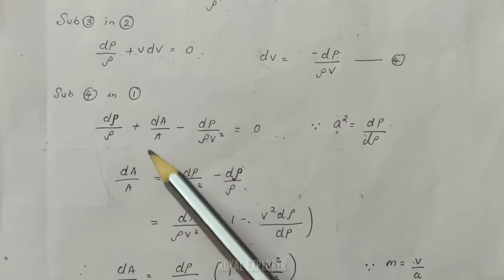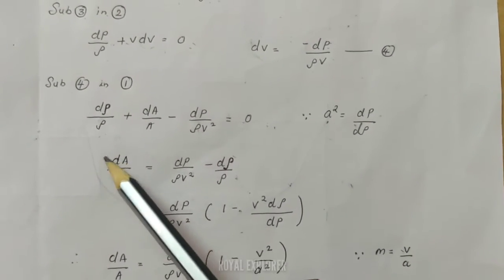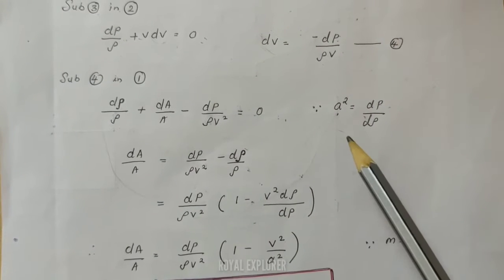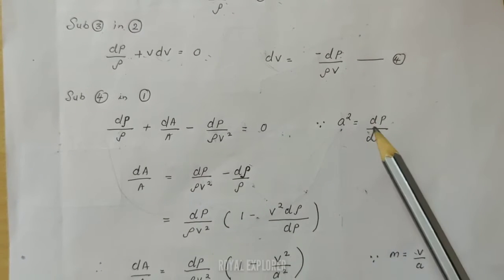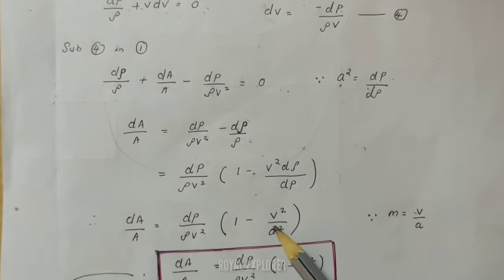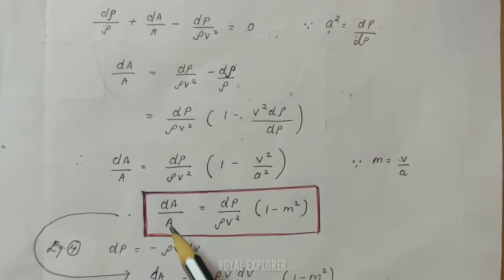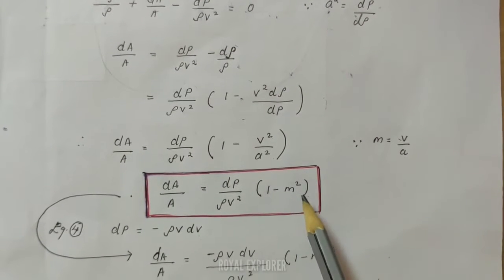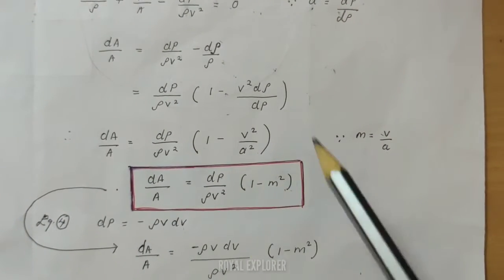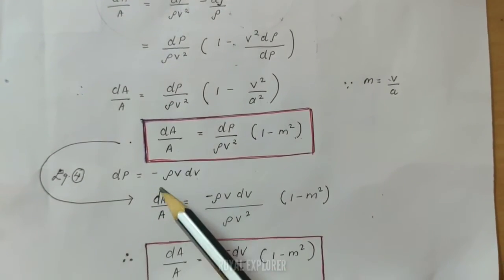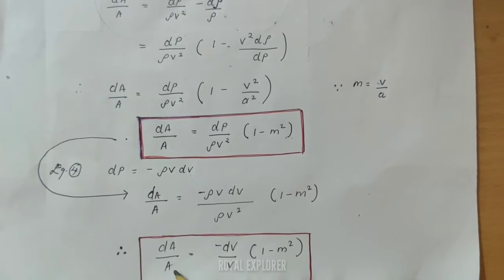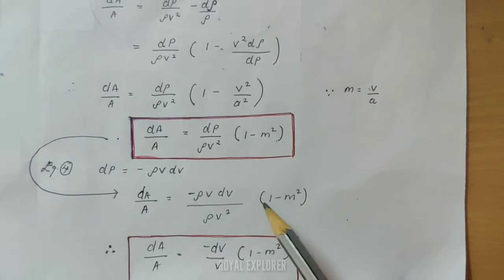Rearranging for dA by A, and using the speed of sound a equals root of dP by d-rho, we get: dA by A equals dP by rho V-squared into 1 minus V-squared by a-squared, which equals dP by rho V-squared into 1 minus M-squared. Substituting further gives the area-velocity relation: dA by A equals minus dV by V into 1 minus M-squared. This is the area-velocity relation using one-dimensional approximation.